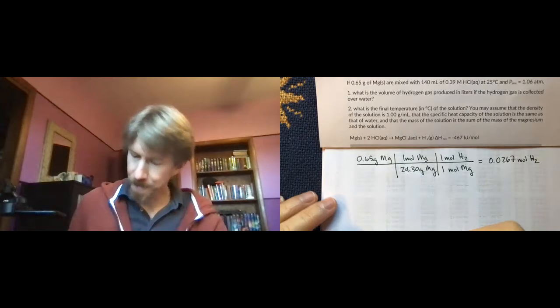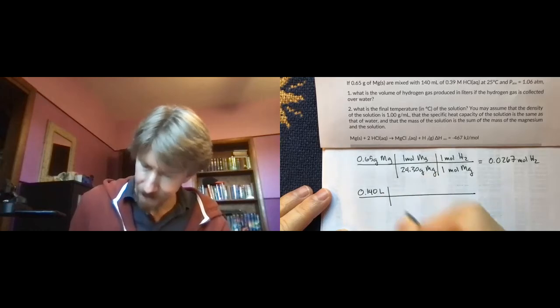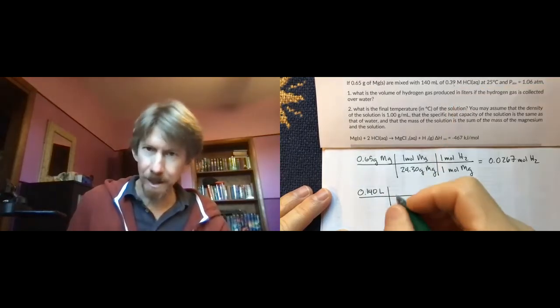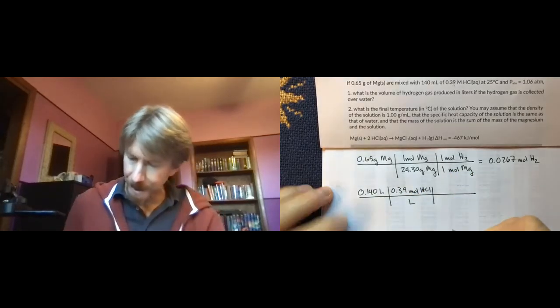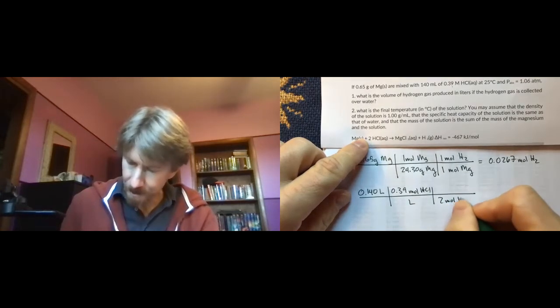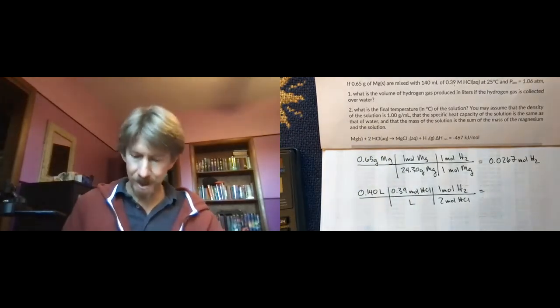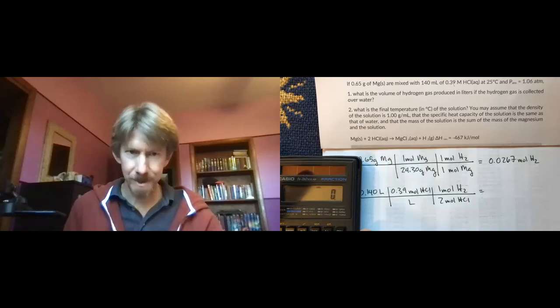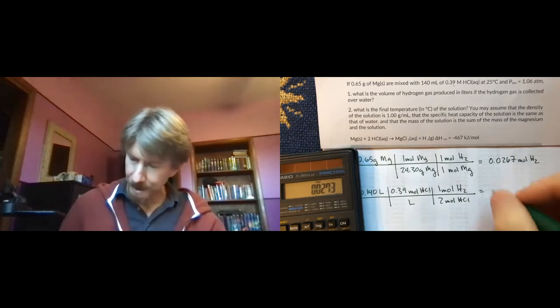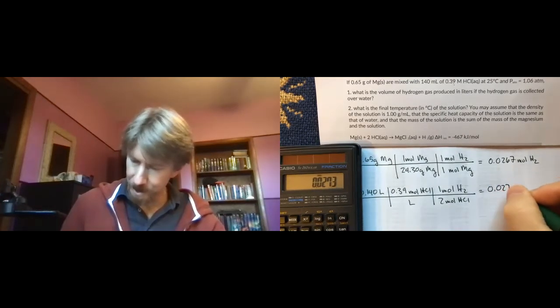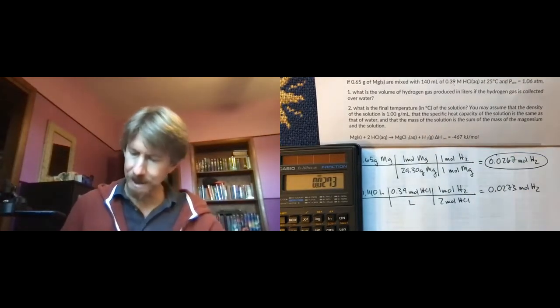Now let's look at how much we can get with our hydrochloric acid. Convert our milliliters into liters. Break our molarity 0.39 moles of HCl per liter. And then this time it's going to take two moles of HCl for every one mole of hydrogen. And let's see how many moles we get here. So let's see, 0.14 times 0.39 divided by two. I get, it's close. 0.0273 moles of hydrogen. Pretty close, but we know that our limiting reactant is still the magnesium.